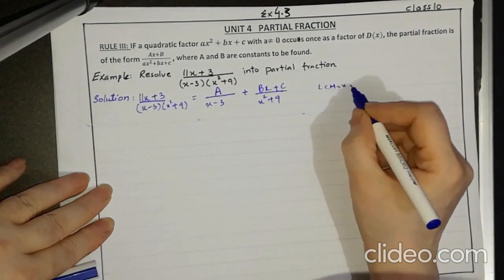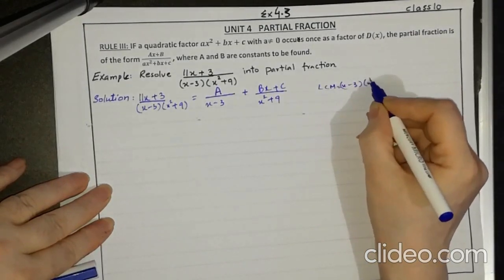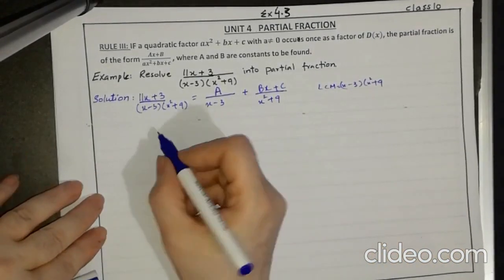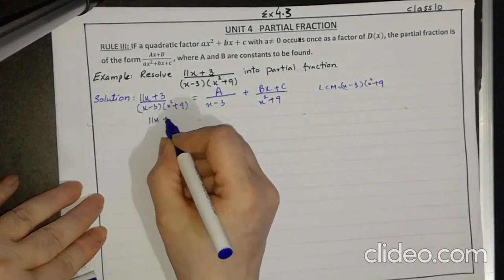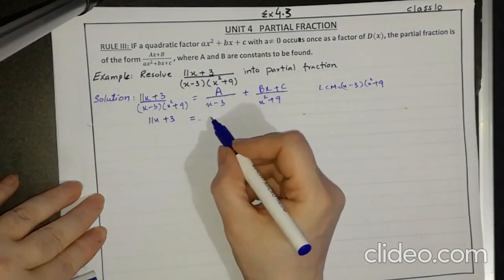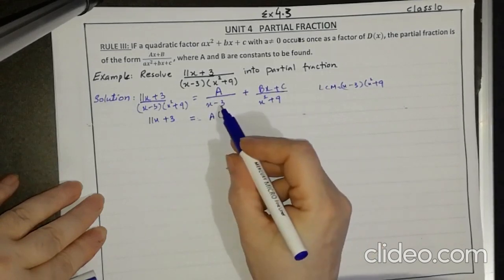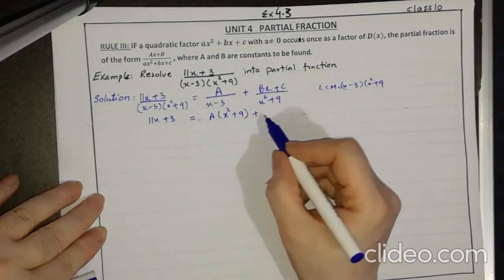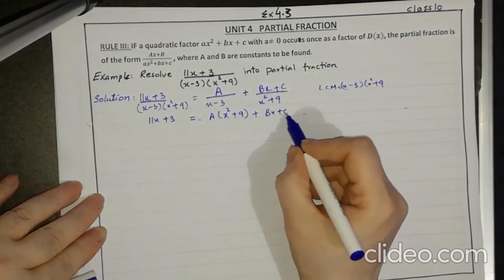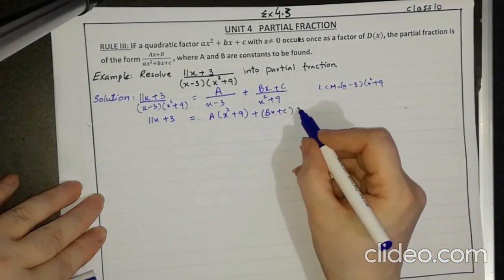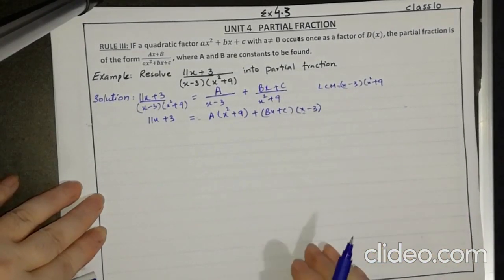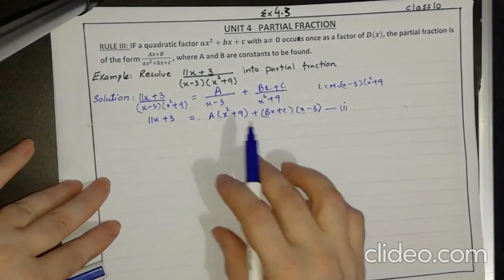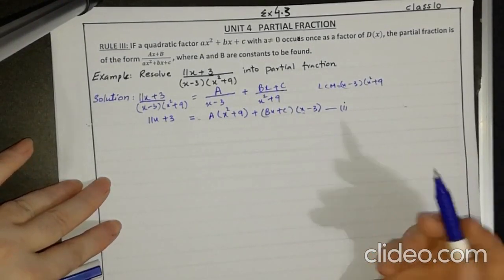The first step is to multiply both sides by the LCM, which is (x − 3)(x² + 9). After multiplying, we get: 11x + 3 = A(x² + 9) + (Bx + C)(x − 3), since (x − 3) cancels on the left term and (x² + 9) cancels on the right term.